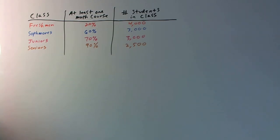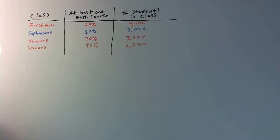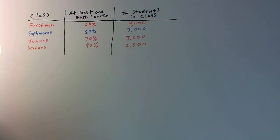So basically, what do we know? We know how many students are in each class — that's the column all the way on the right. We know the percentage of those students who have taken at least one math course. So let's figure out how many students total have taken at least one math course. We know that 20% of the freshmen have taken at least one math course and we know the number of students in the freshman class, so we can calculate how many freshmen have taken at least one math course.